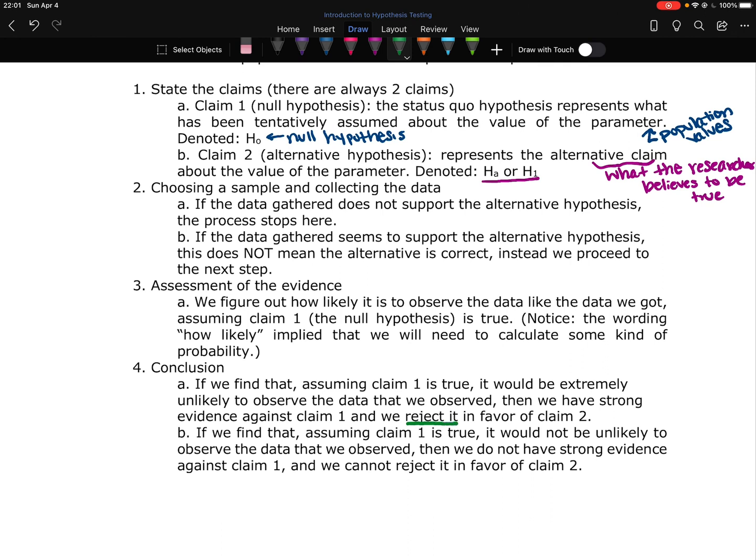I just want to underline we reject it. If, however, we find that assuming that our null hypothesis, our first claim is true, it would not be unlikely to observe the data that we observed, then we do not have strong evidence against claim one and we cannot reject it. Those are the two conclusions that we're going to come to. We are either going to reject the original claim one, reject the null hypothesis, or we are not going to reject the null hypothesis.